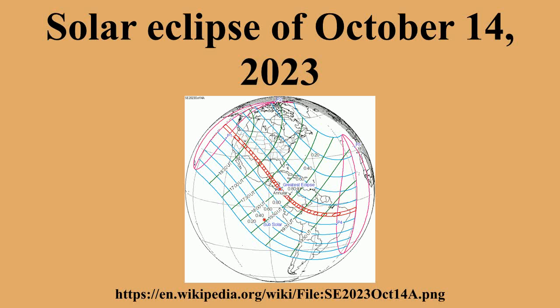An annular solar eclipse occurs when the Moon's apparent diameter is smaller than the Sun's, blocking most of the Sun's light and causing the Sun to look like an annulus. An annular eclipse appears as a partial eclipse over a region of the Earth thousands of kilometers wide.